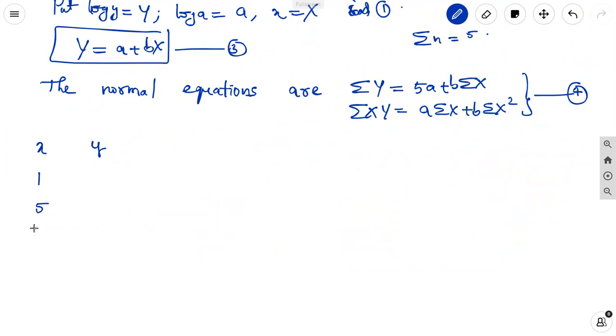Small x is 1, 5, 7, 9, 12. Y values are 10, 15, 12, 15, 21.